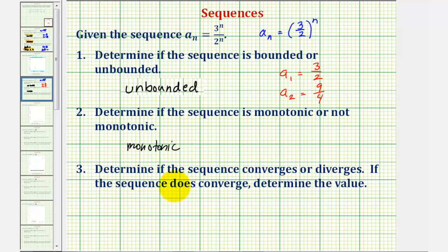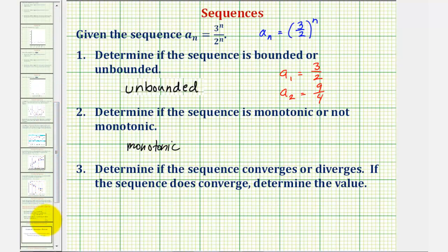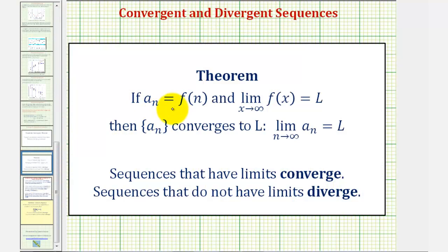Now for part three, we want to determine if the sequence converges or diverges, and if the sequence converges, determine the value. We already know that the sequence increases without bound, so the sequence is going to diverge. To be more formal: if a sub n equals f of n and the limit as x approaches infinity of f of x equals L, then a sub n converges to L. But if this limit doesn't exist, then the sequence diverges.